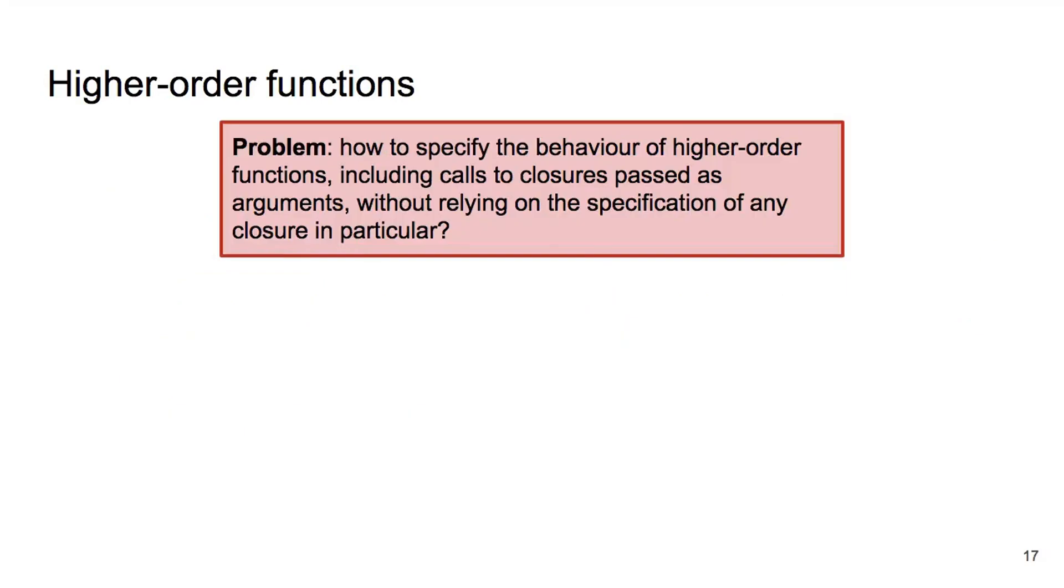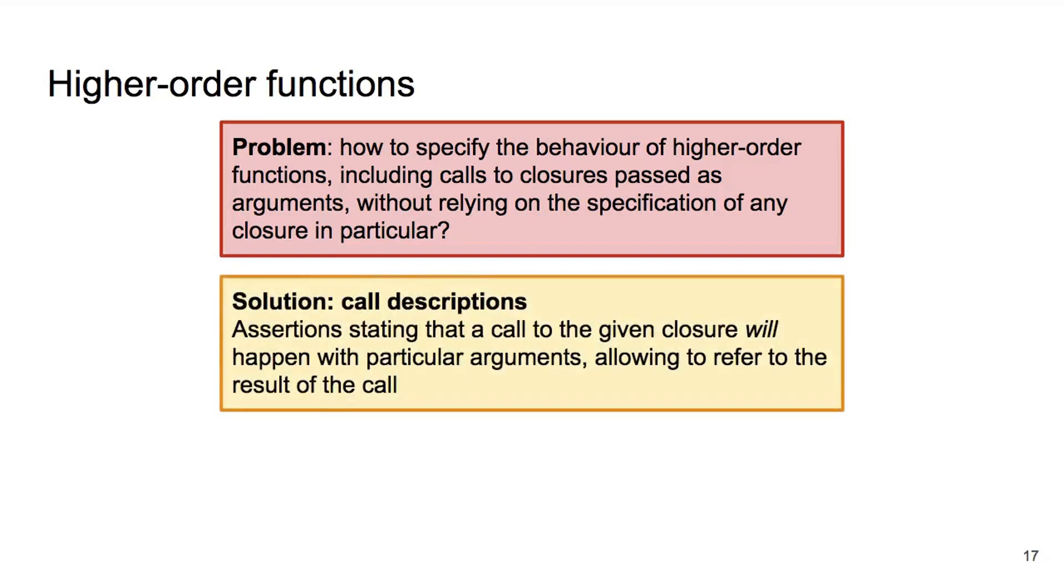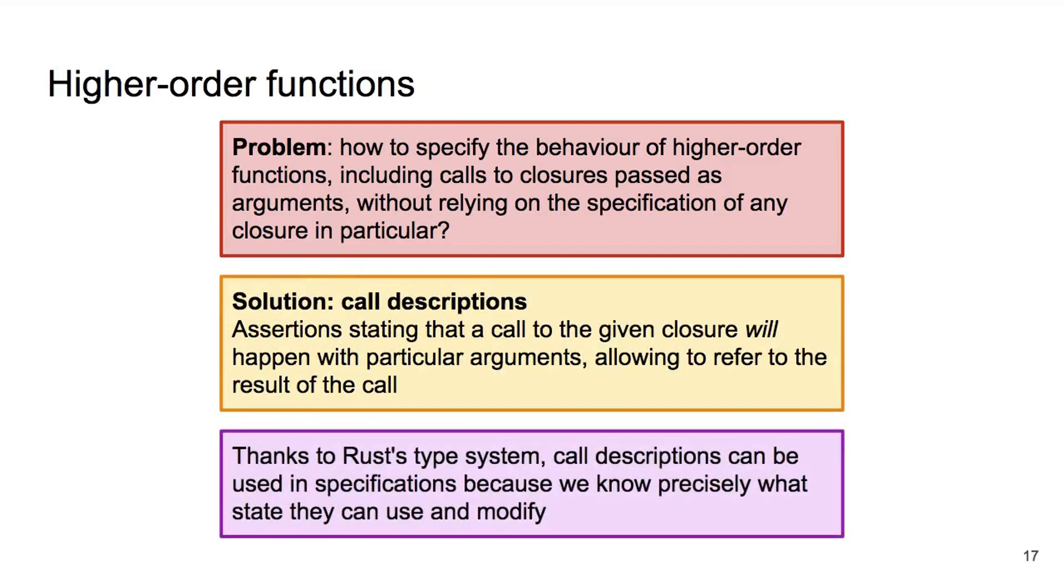To summarize, we needed a way to specify how closures are used by a high-order function, and to be able to refer to the results of such calls, without relying on any particular closure specification. We have used call descriptions to achieve this. Yet again, Rust's type system allows us to know precisely which state can be used, and modified by a call description.